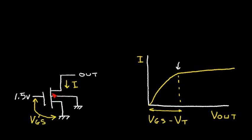Recall that this key voltage here — the gate-to-source voltage minus the threshold voltage — is the voltage at which the channel in this transistor is just getting pinched off. The electric field at the drain side is just enough to be at the transistor threshold and put us in this particular region. Now let me undo some of these markings.